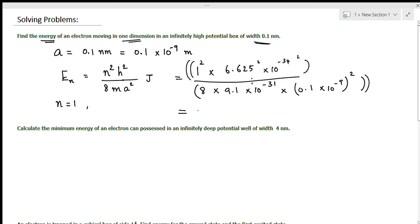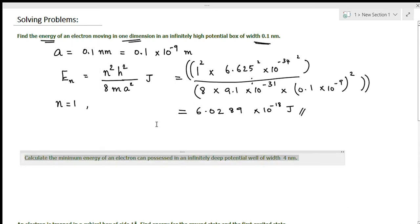Writing it here: 6.0289 × 10⁻¹⁸ joules. If the electron energy has to be expressed in electron volts, then E₁ in electron volts can be calculated by dividing the obtained value of energy in joules by 1.6 × 10⁻¹⁹.